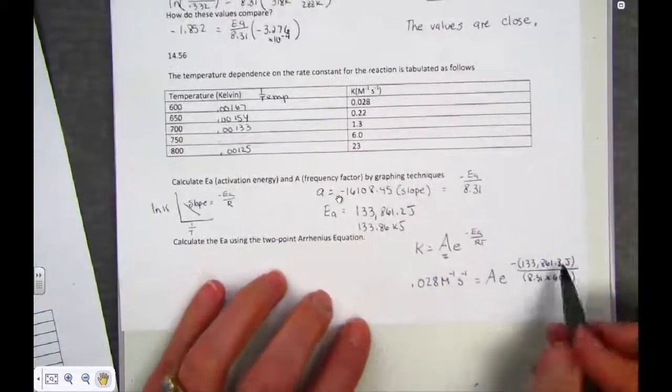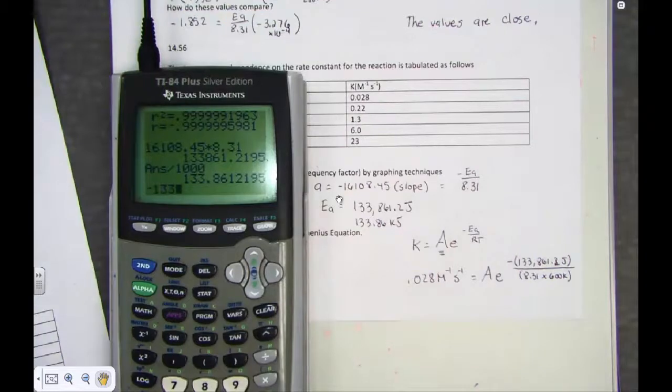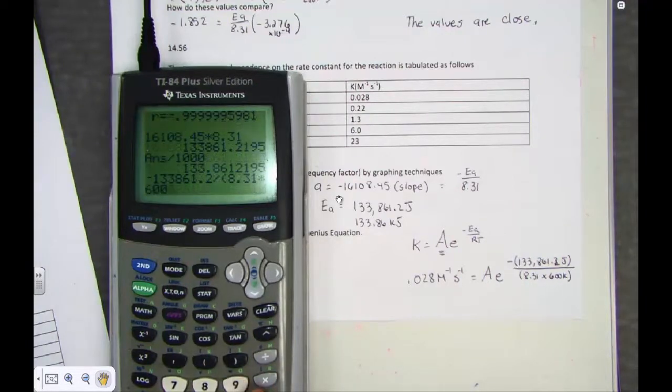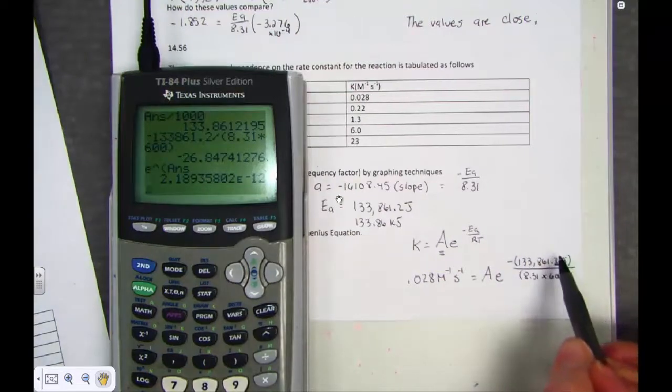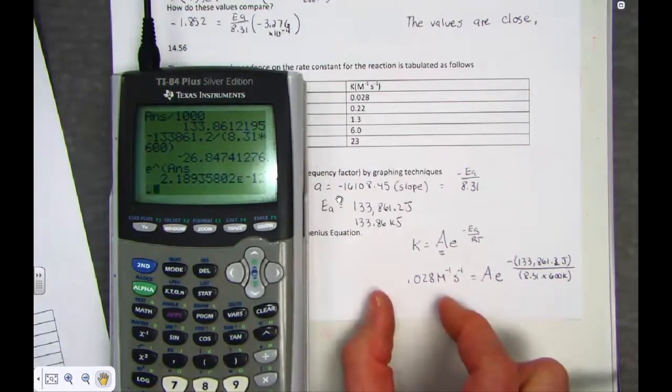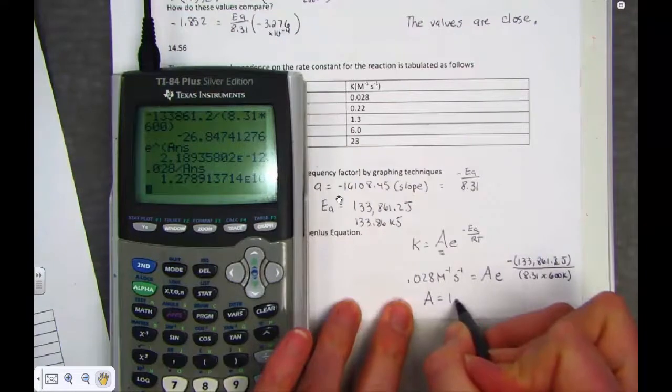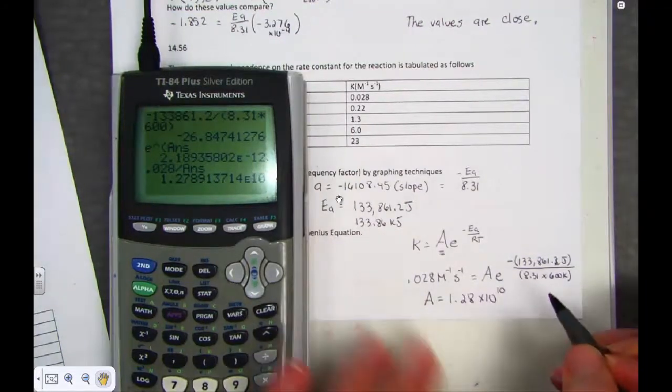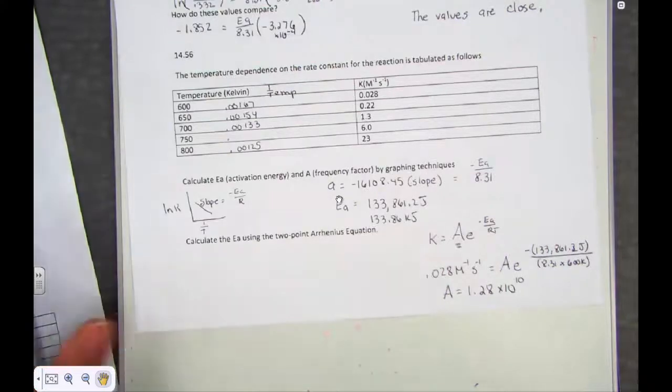Let's simplify what's going on in these parentheses here first. Negative 133,861.2, divided by the R and the Kelvin temperature. E raised to that answer is this entire thing simplified. 2.19 times 10 to the negative 12th. Now, of course, to pull out A, I have to start on the left side. 0.028 divided by that answer, and I get a value. A is 1.28 times 10 to the 10th power.